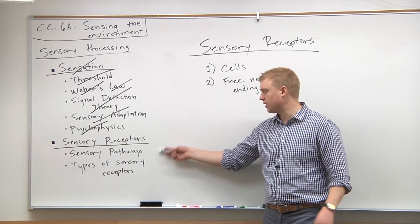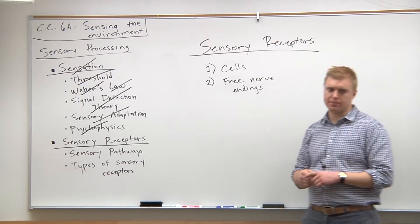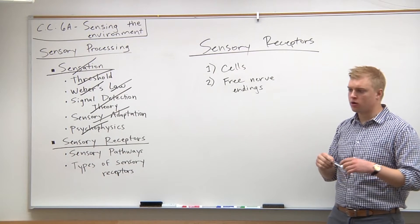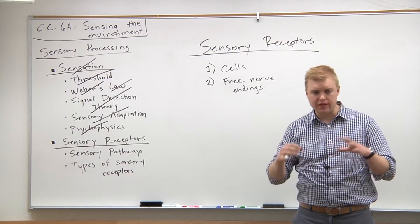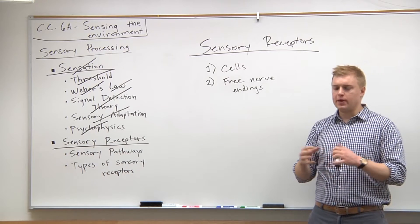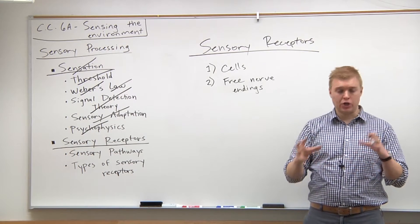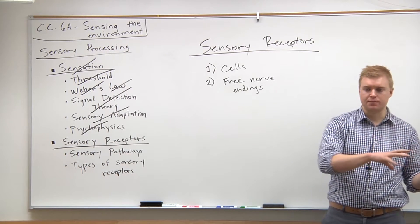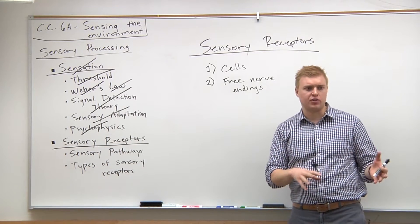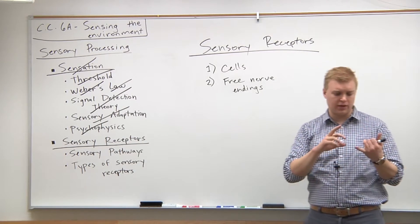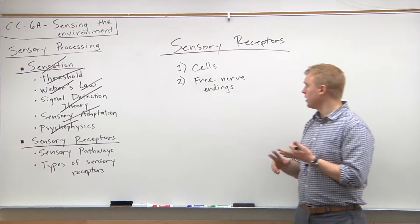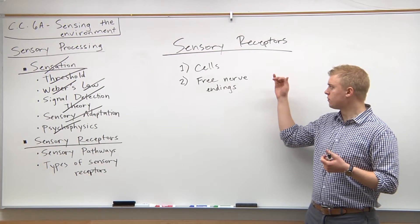Let's jump into the last topic: sensory receptors. Sensory receptors are different kinds — they're basically specialized neurons. If you think about a typical neuron, it's stimulated by neurotransmitters from other cells. Sensory receptors, on the other hand, are stimulated by different kinds of energy, such as light, heat, or sound.